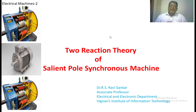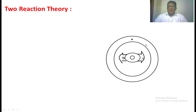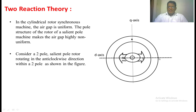The machine is symmetrical about the d-axis and q-axis. That is why we have taken the q-axis. Now we are going to define what the d-axis and q-axis are, and how we are going to consider the armature reaction. We have considered a two-pole machine — this is the stator, this is the rotor, and the rotor has two poles. The d-axis is the axis passing through the main field. The q-axis is perpendicular to the d-axis, with an angle of 90 degrees between them. The machine is symmetrical about both the d-axis and the q-axis.